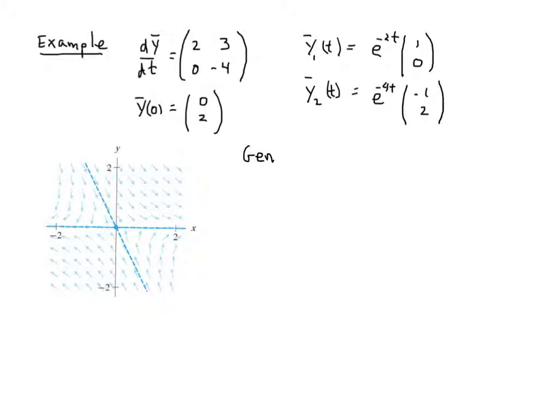It's going to look like some constant k₁ times y₁ plus some other constant k₂ times y₂. We are assured, we are guaranteed, that this is a solution from the linearity principle. But now the question is, can we find the k₁ and the k₂ so that we go specifically through the point (0, 2)? So what we're looking for here is (0, 2). We're looking for the solution that passes through it, and it'll look like this if we were to draw it.